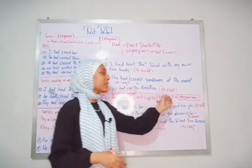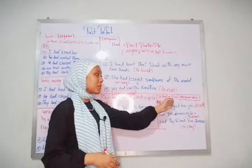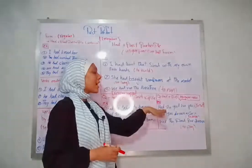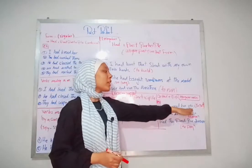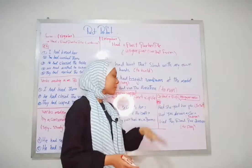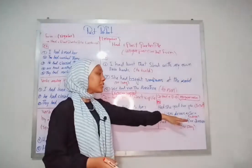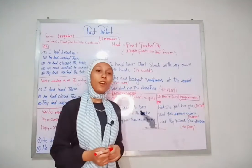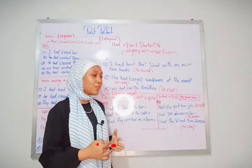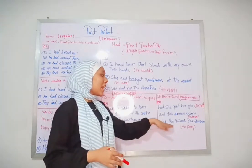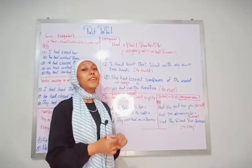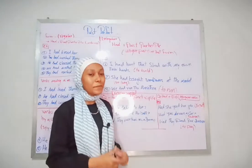For irregular verbs in questions, the structure is the same — had plus past participle. Examples: Had she quit her job yet? — the infinitive form is 'to quit'. Had you driven a car? — the infinitive form is 'to drive'. Had they paid for dinner? — the infinitive form is 'to pay'.